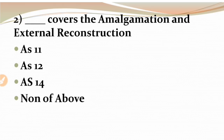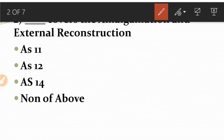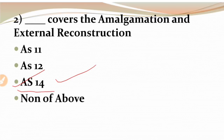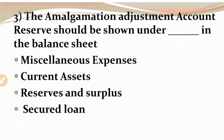MCQ 2: Which accounting standard covers amalgamation and external reconstruction? Accounting standards are very important - you can be asked MCQs or true/false on them every year. The options are AS 11, AS 12, AS 14, or none of the above. The right answer is AS 14. AS 14 deals with amalgamation - you must remember that.